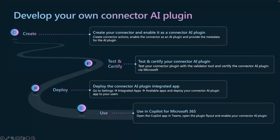The certification process goes through Microsoft. When Microsoft approves it, it will be available in the integrated apps area in the Microsoft 365 admin area. You can go to Settings, Integrated Apps, and Available Apps to deploy your connector AI plugin to your users — one person, multiple people, or your whole company. After that, they can use it in Copilot for Microsoft 365 — they can open it in the Copilot app for Teams, use the plugin flyout, and enable the connector.